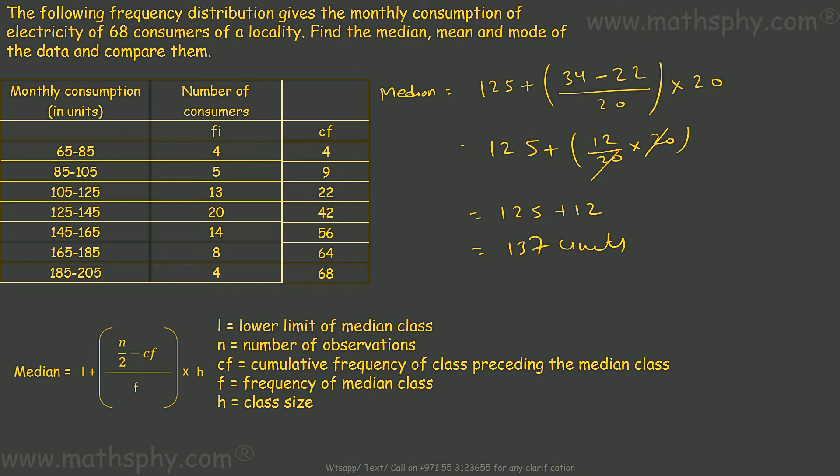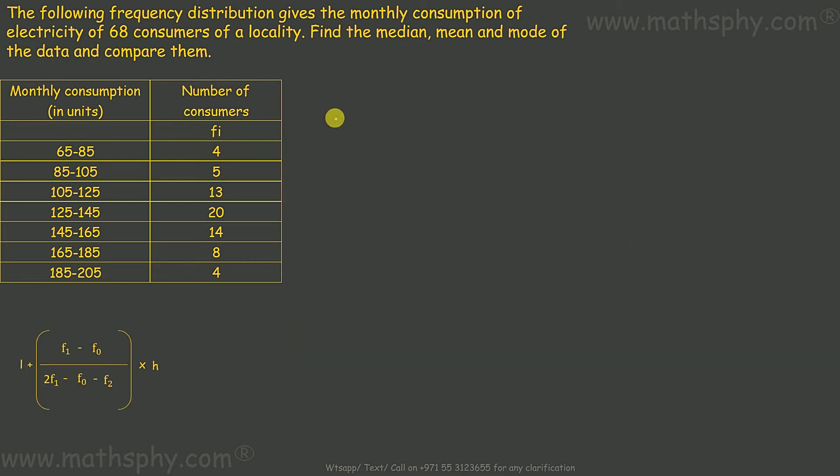Now let's find out the mode. Mode has this formula here. First, L. Highest frequency is 20. So modal class would be 125 to 145. L would be 125. F1 would be 20, highest frequency of this modal class. F0 preceding this is 14. F2 after this is 14. Make sure you don't take cumulative frequency into mode. We have to follow the actual frequency.